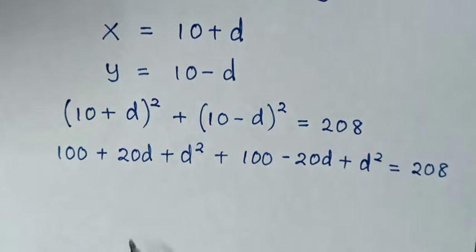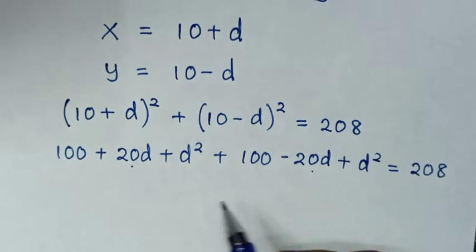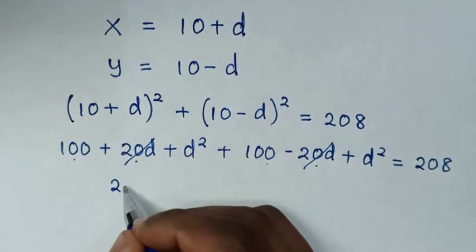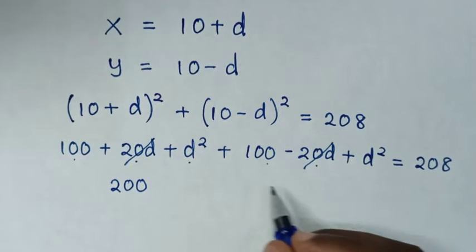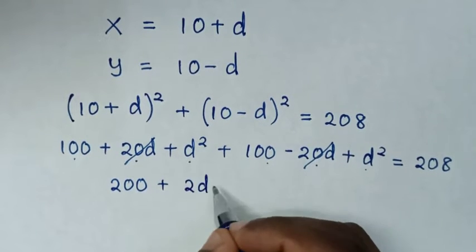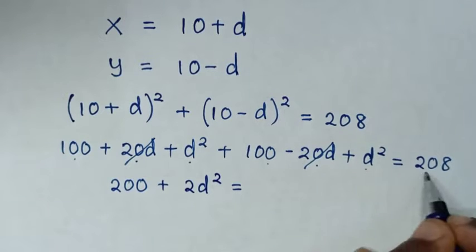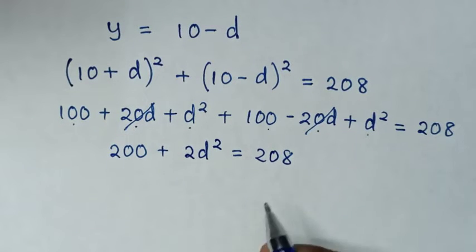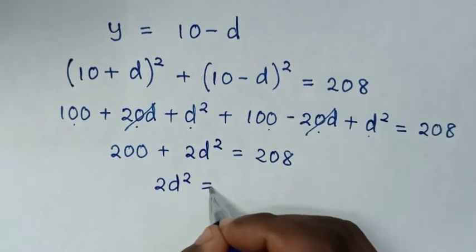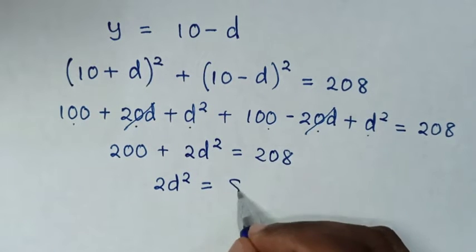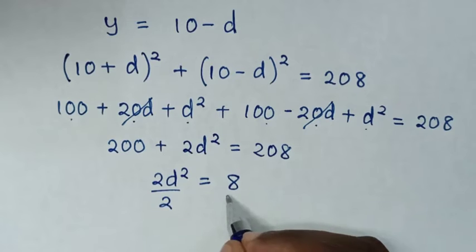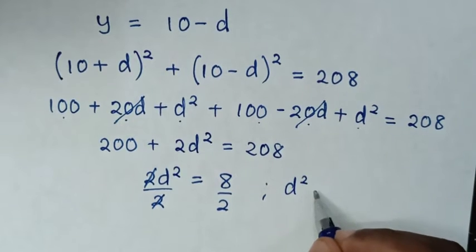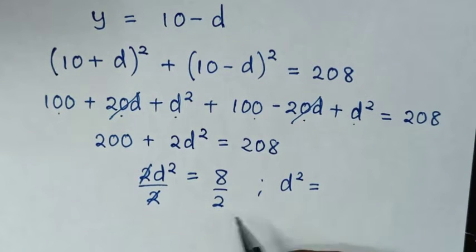Then in the next step, from here we have 20d and here we have negative 20d, so this minus this is 0. Then 100 plus 100 is 200, then plus d squared plus d squared is 2d squared, is equal to 208. In the next step we take 200 to the right side, so 2d squared is equal to 208 minus 200, which is 8. Then we divide by 2 on both sides, so d squared is equal to 8 divided by 2, which is 4.